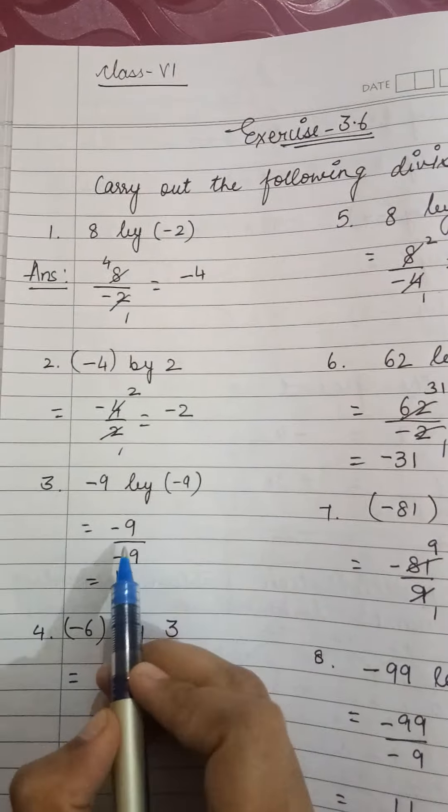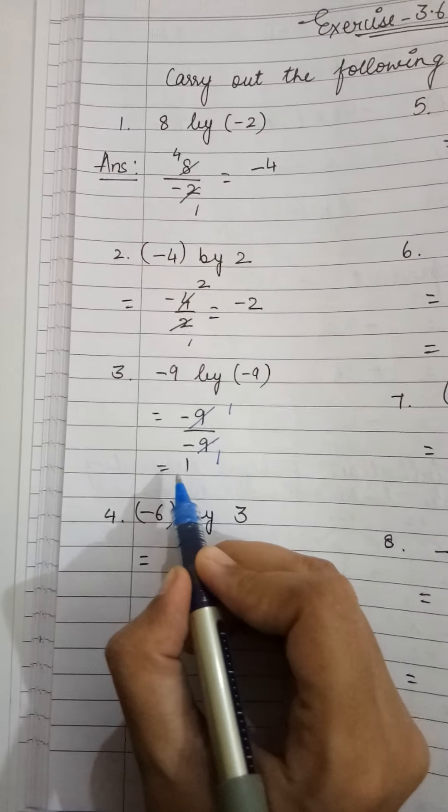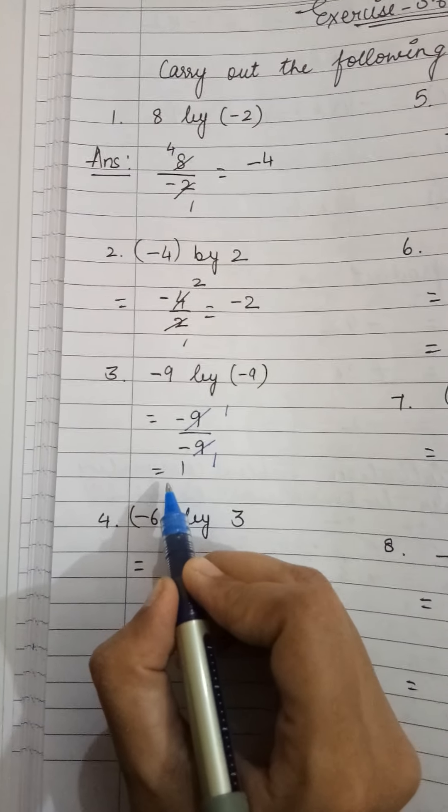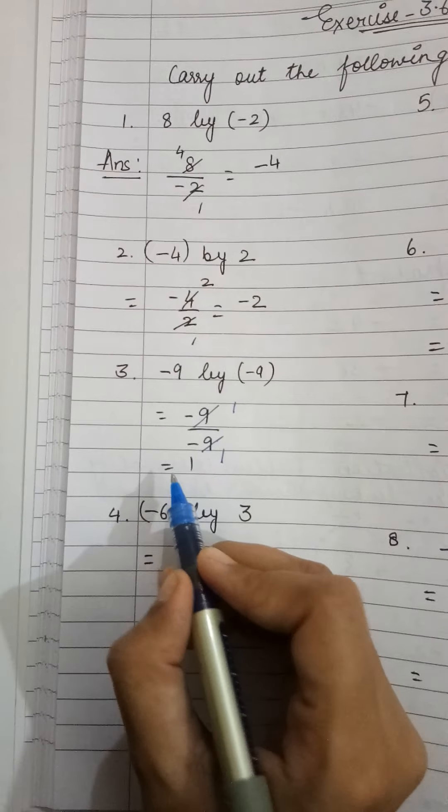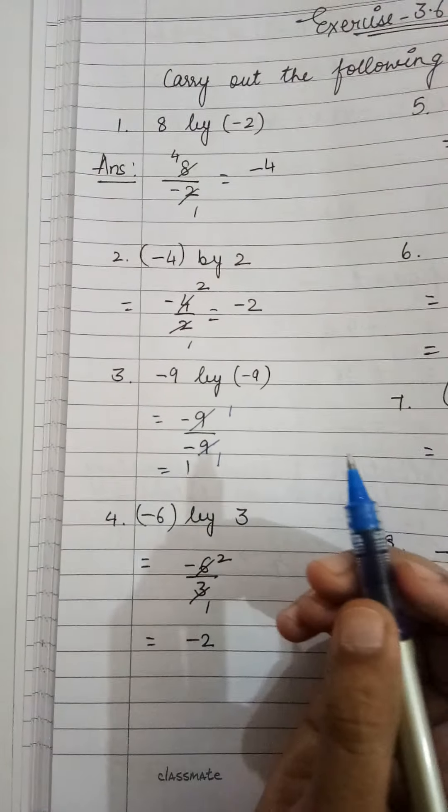Similarly, the next one: minus 9 you have to divide by minus 9. You will write it like this. 9 ones are 9, 9 ones are 9. So the answer will come 1, but with which sign? What is minus minus? Plus. So we are not putting the plus sign here because if no sign is there, that means the sign is plus.